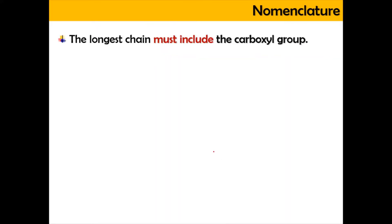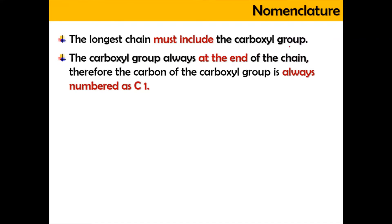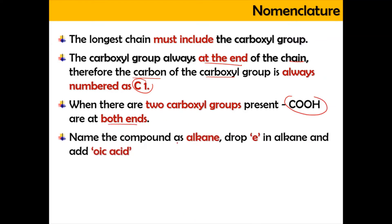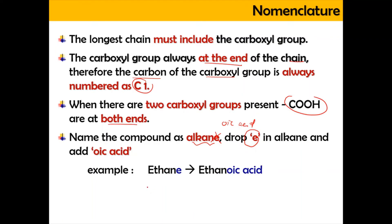For the nomenclature, we need to find the longest carbon chain, similar to what we have learned in previous chapters, and it must include the carboxyl group. The carboxyl group is always at the end of the chain, and therefore the carbon of the carboxyl group is always numbered as number 1. When there are 2 carboxyl groups present, the carboxyl group will be at both ends of the chain. The parent carbon name is named as alkane, where we drop the letter 'e' and change it with 'oic acid'. For example, ethane, which has 2 carbons — CH3 and CH3 — when it becomes an acid with a carboxyl group, it becomes CH3COOH, so from ethane it becomes ethanoic acid.